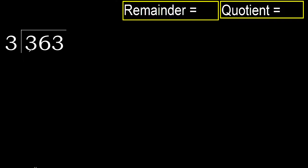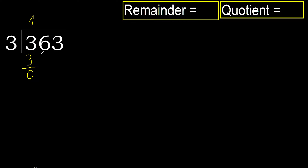363 divided by 3. 3 is not less, therefore with 3. 3 multiplied by which number is nearest to 3, but not greater — 3 multiplied by 1 is 3, not greater. 3 multiplied by 2 is 6, which is greater. So 3 multiplied by 1 is 3. Subtract. Bring down next. Eliminate 0 on this side.